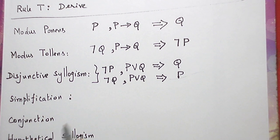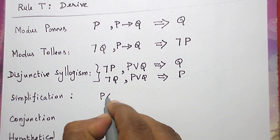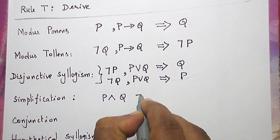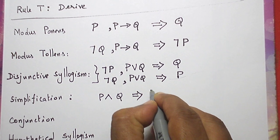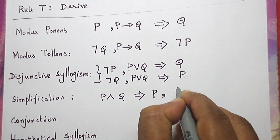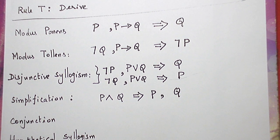Now, simplification. The conjunctive statement, P and Q, conjunction statement, P and Q shall be simplified as either P or Q. We shall simplify.